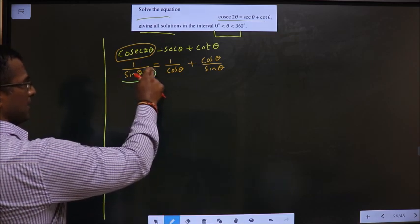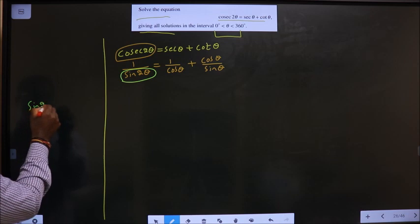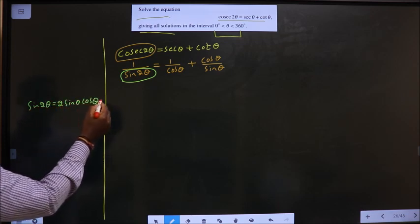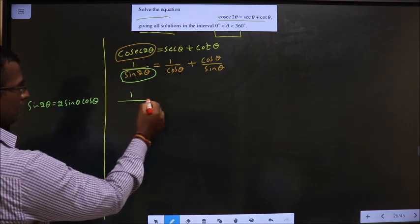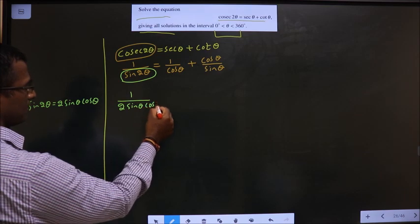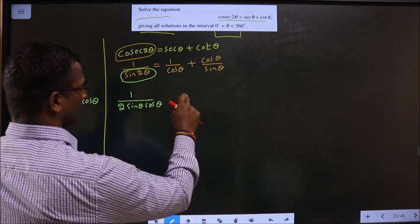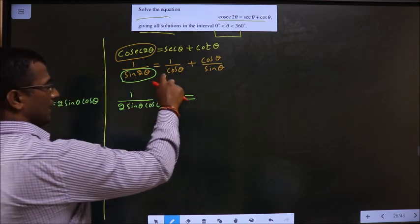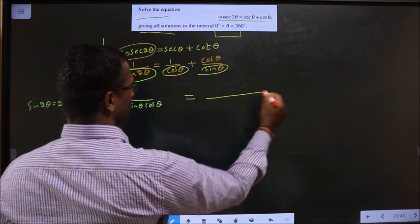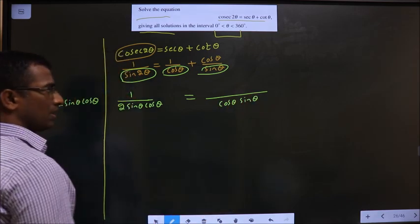Replace sine 2θ with the formula. The formula of sine 2θ is 2 sine θ cos θ. So this will become 1 by 2 sine θ cos θ. And on this side, take the LCM. LCM will become cos θ sine θ.